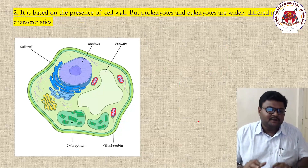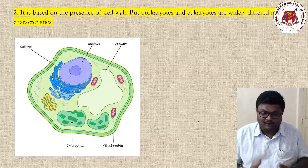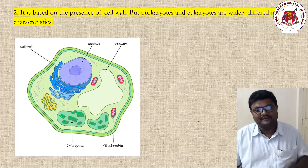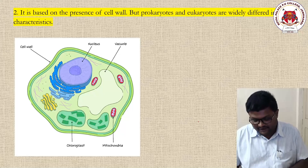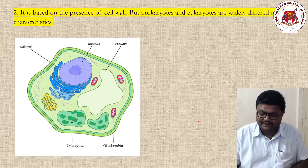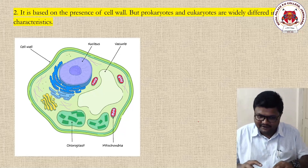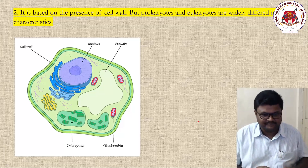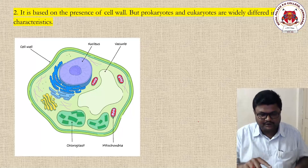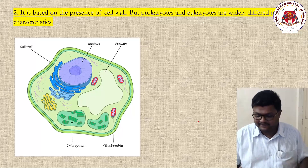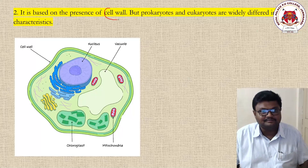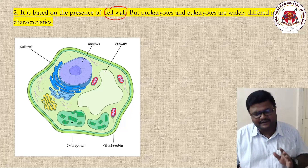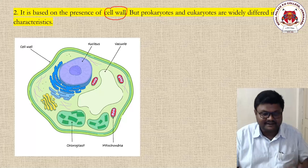The second drawback: organisms were added to Kingdom Plantae simply because of the presence of a cell wall — whether prokaryotic or eukaryotic. A prokaryotic organism with a cell wall was added to the plant kingdom, and a eukaryotic organism with a cell wall was also added to Kingdom Plantae. This created a misunderstanding by adding organisms into one category based only on the cell wall factor, which was wrong.